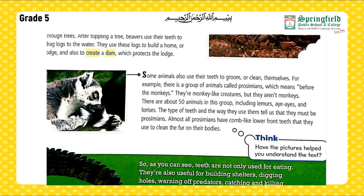For example, there is a group of animals called prosimians, which means 'before the monkeys.' They're monkey-like creatures, but they aren't monkeys. There are about 50 animals in this group, including lemurs, aye-ayes, and lorises. The type of teeth and the way they use them tell us that they must be prosimians. Almost all prosimians have comb-like lower front teeth that they use to clean the fur on their bodies.